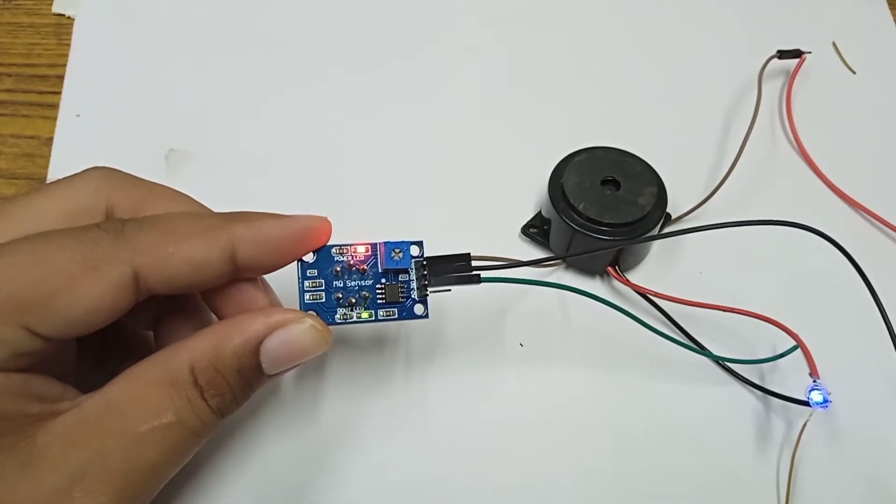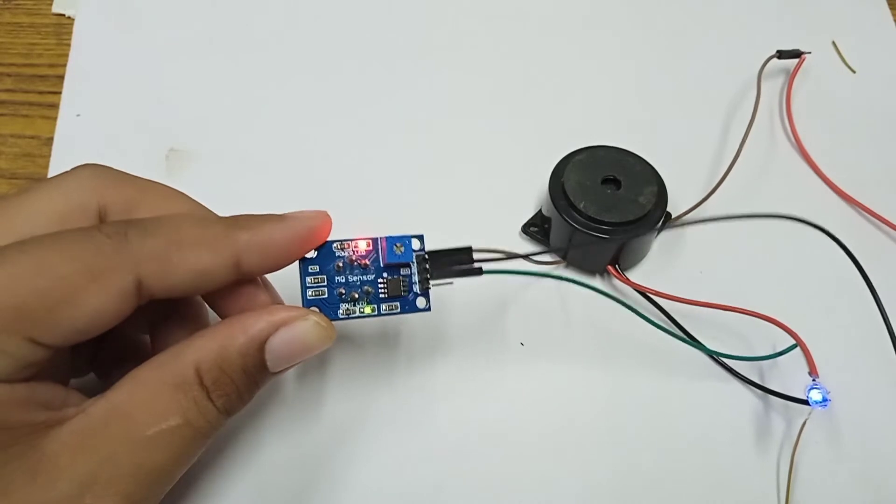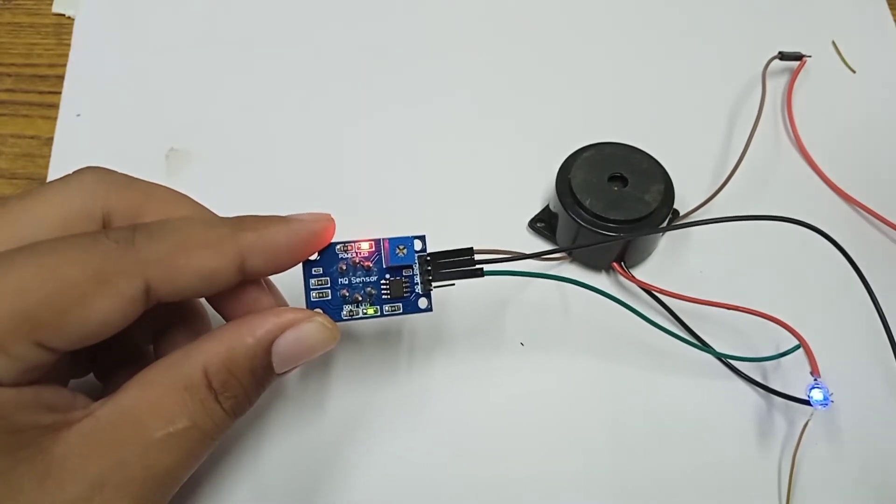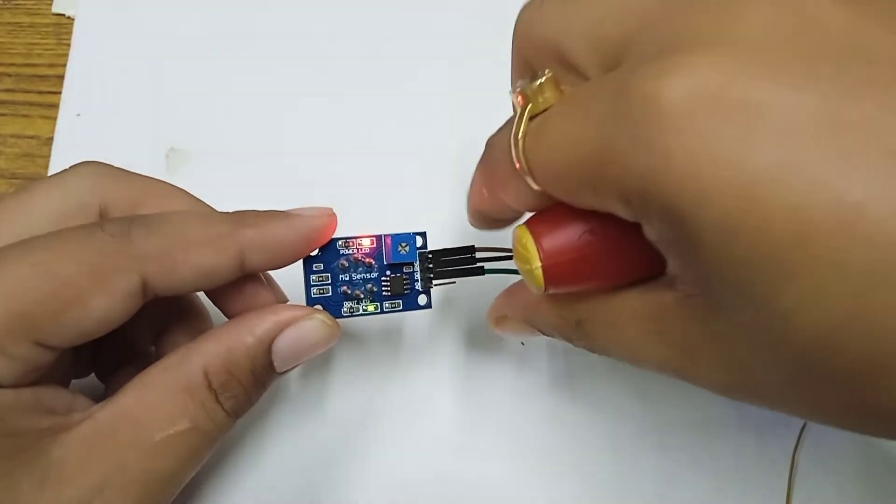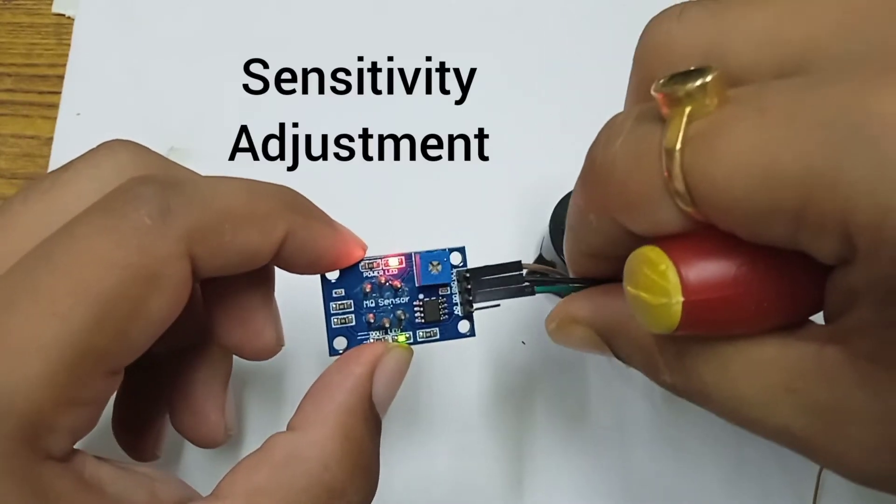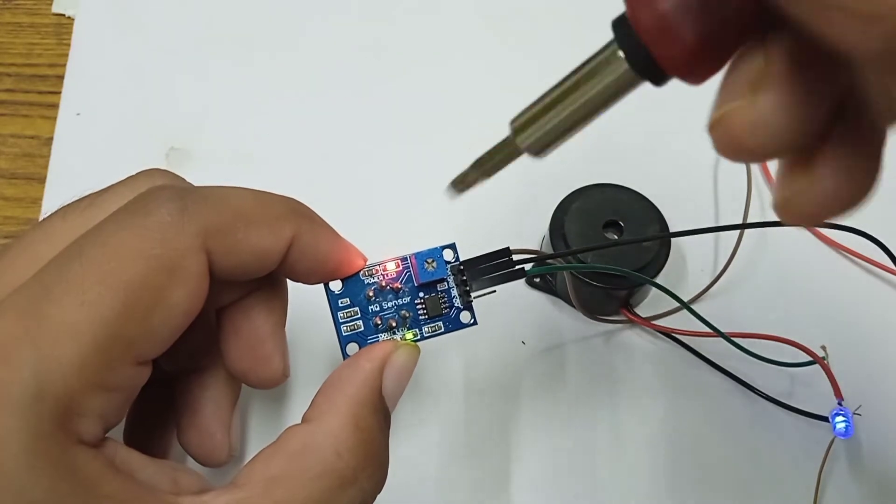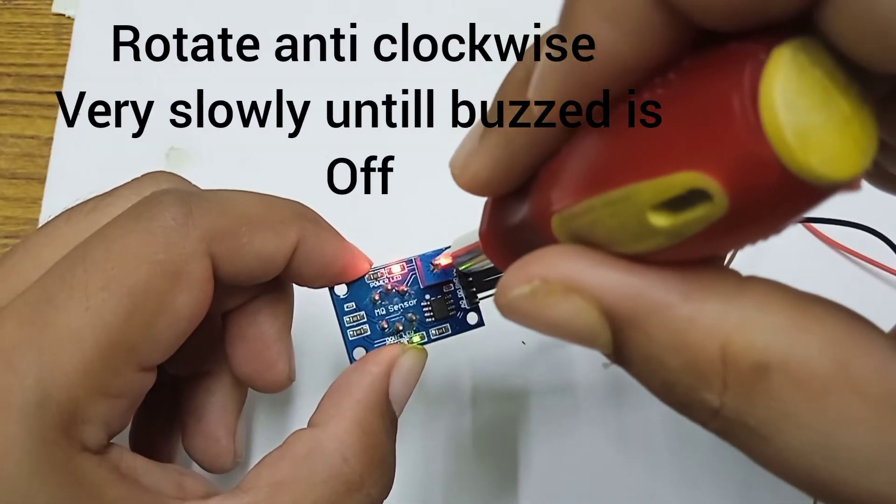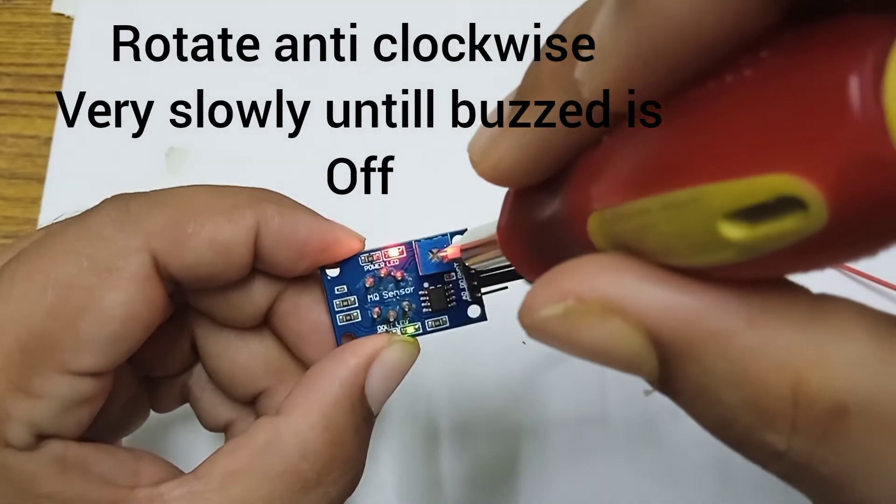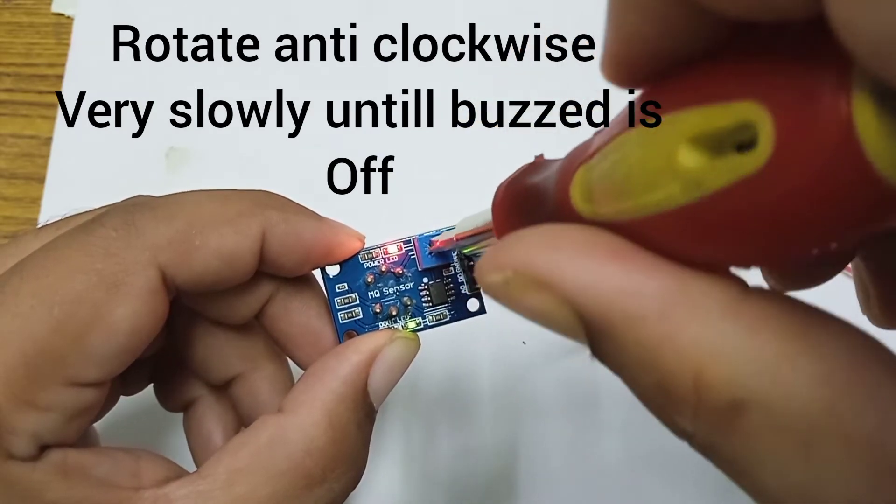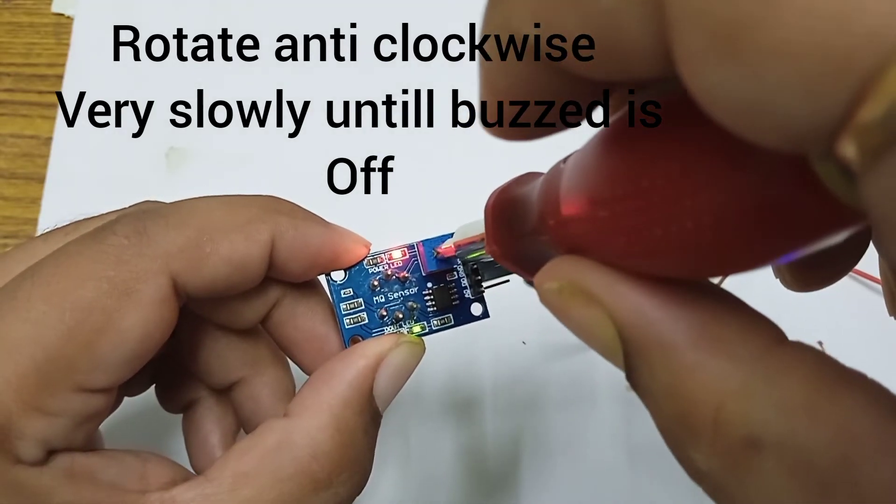Now as you can see, both LEDs are on and already 60 seconds is over, still the buzzer is in on condition. So we have to do some adjustment. Using a screwdriver or any other equipment, you just rotate this in anti-clockwise until this buzzer gets stopped.